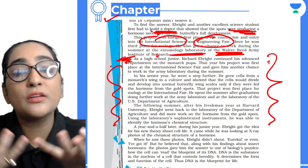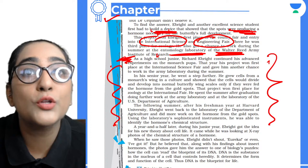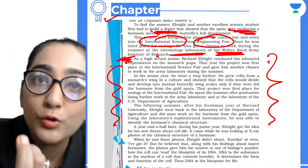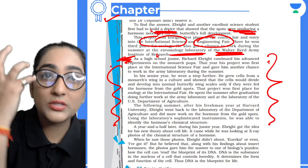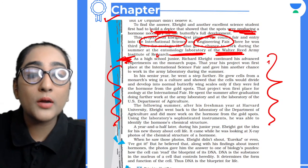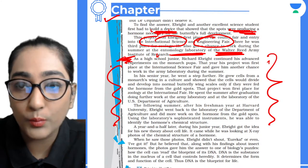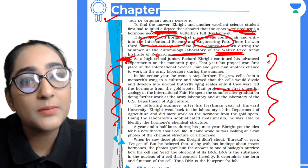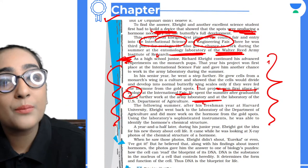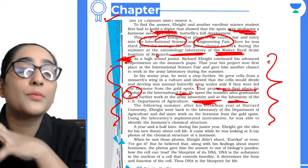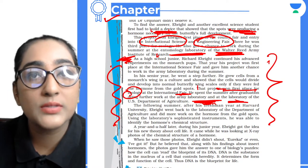As a high school junior, Richard Ebright continued his advanced experiments on Monarch pupae. That year, his project won first place at the international science fair and gave him another chance to work at the army laboratory in summer. In his senior year, he went a step further - he grew cells from a Monarch's wing in a culture.